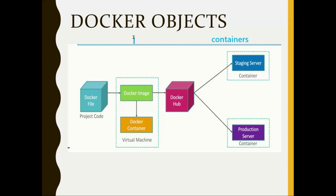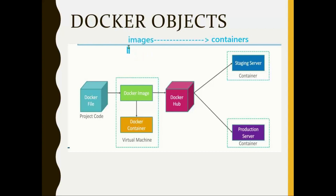We get containers from something called Docker images. A Docker image is a static file — listen carefully, it is a read-only file. When you run this image, you get a container. So a container is a running instance of the image.